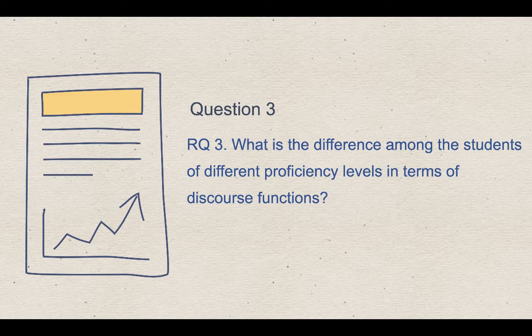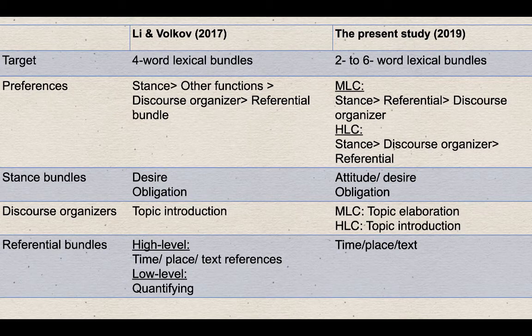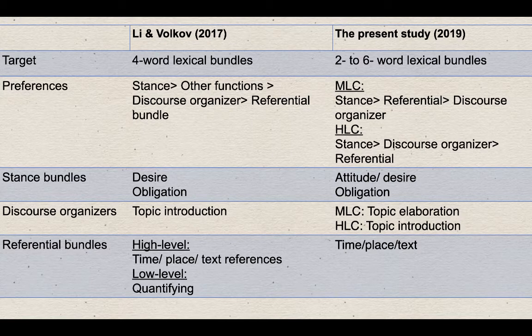The third table also lists the top five Lexical Bundles for each word string in the higher-level corpus. For the third question, what is the difference among students of different proficiency levels in terms of discourse function? For the last question, the study will only focus on median-level and higher-level students. Moreover, only three-word to six-word Lexical Bundles are classified because most two-word Lexical Bundles are not meaningful. I compared the previous studies to see whether there is any difference between the two studies so we can examine the results of the discourse function.